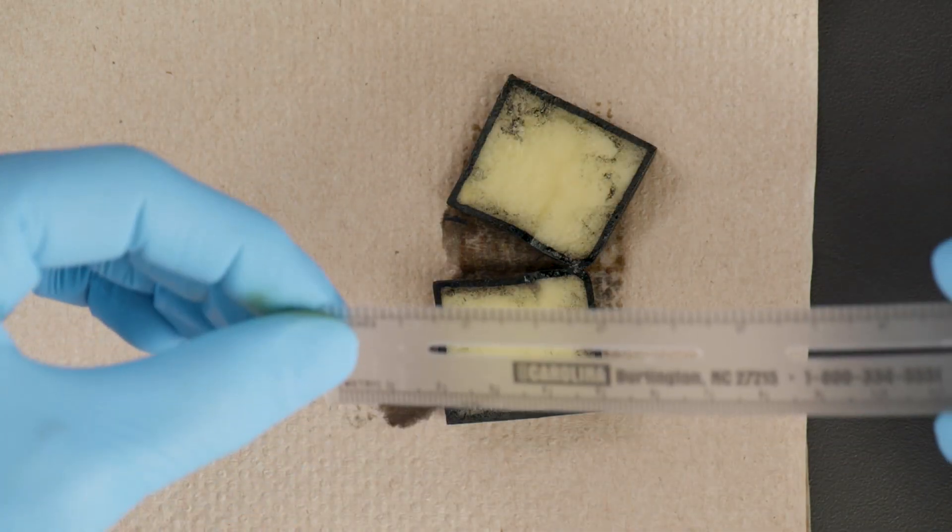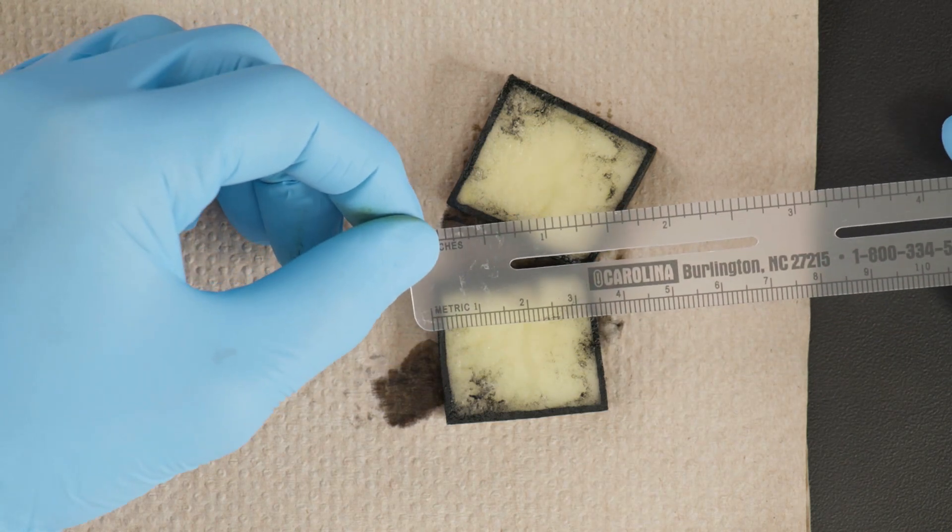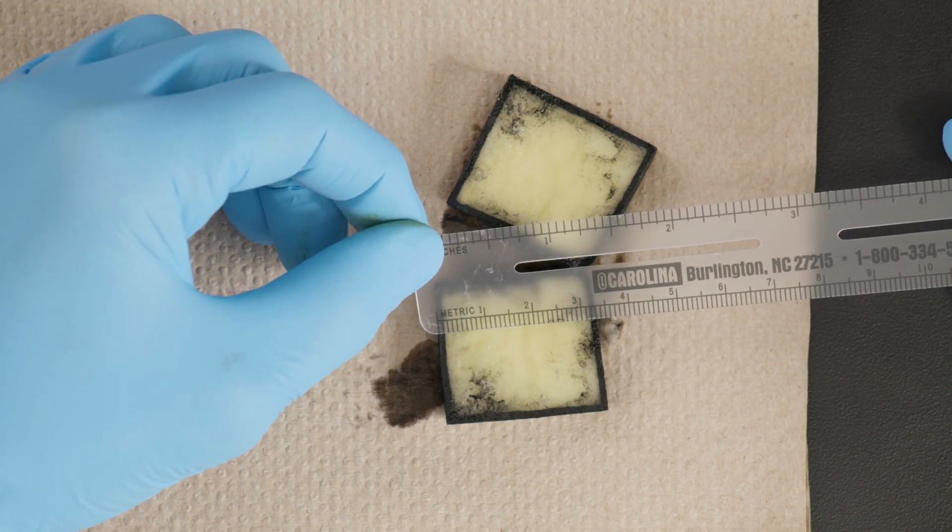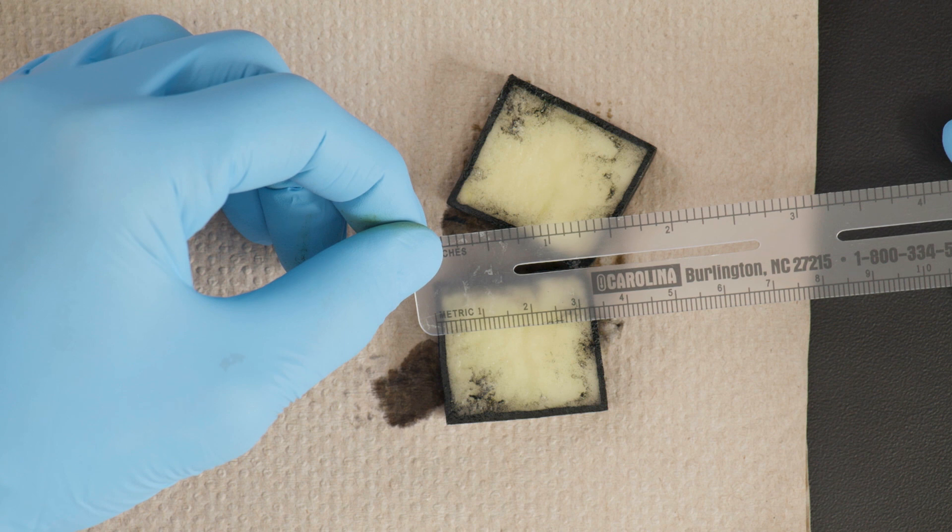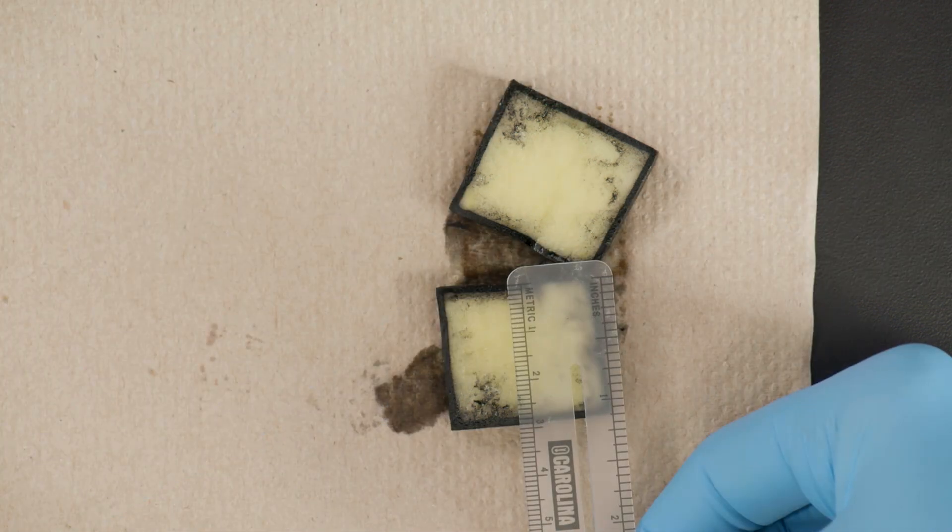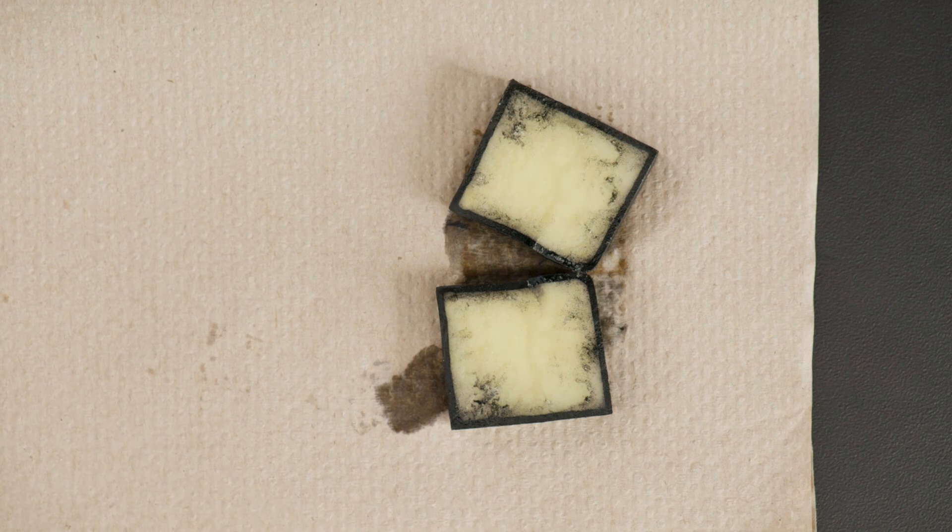Use the metric ruler to measure the size of the cross-section. Start by measuring one side in centimeters to two decimal places. Then measure the second side in centimeters to two decimal places.